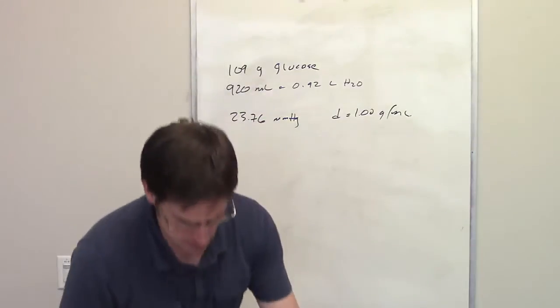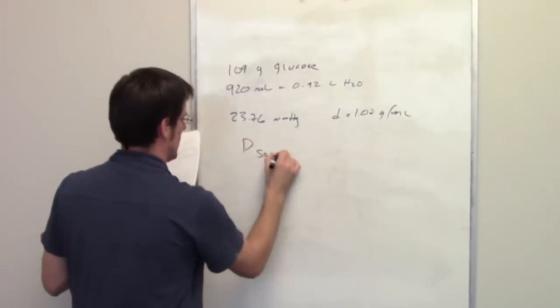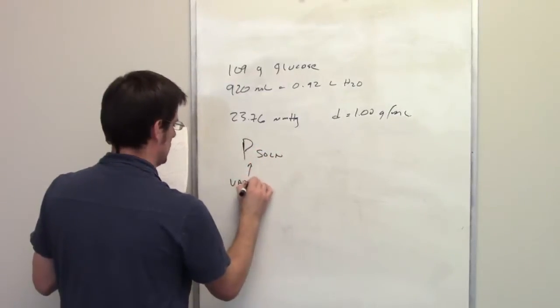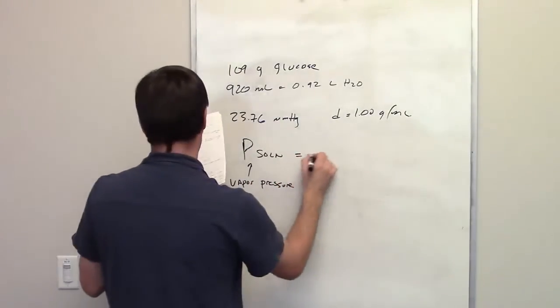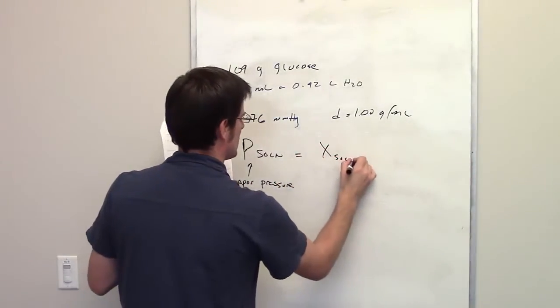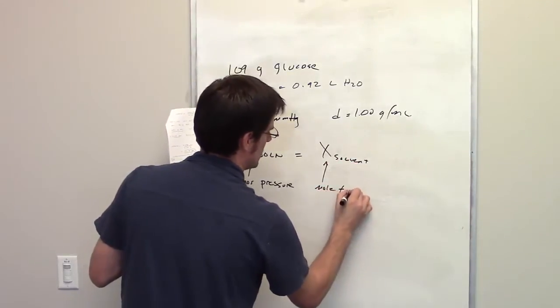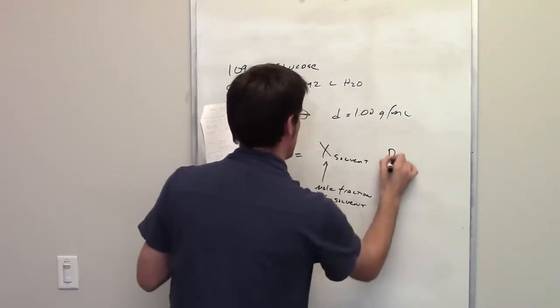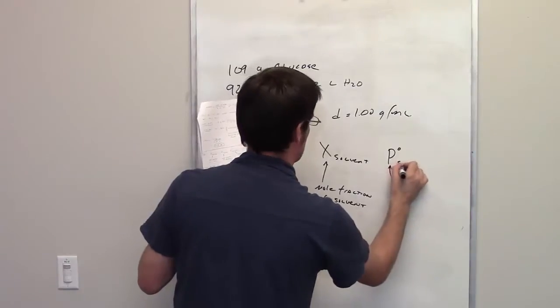Raoult's Law is a magical equation that tells us that the vapor pressure of a solution is equal to the mole fraction of the solvent multiplied by the vapor pressure of pure solvent.